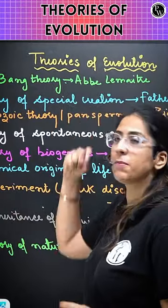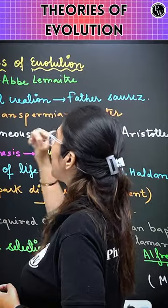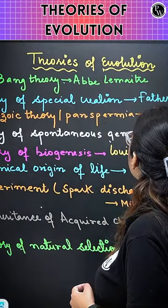First, Big Bang Theory given by Abbe Lemaitre, which talks about the evolution of the universe. Theory of Special Creation: Father Suarez. Cosmozoic Theory, Theory of Panspermia: Richter.